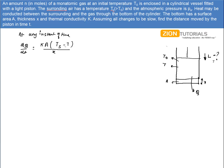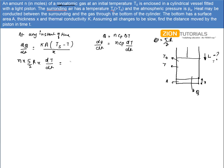We know that Q is given by N·Cp·ΔT. So dQ/dt can be written as N·Cp·dT/dt. The value of Cp is 5R/2 because for a monoatomic gas, Cp equals 5R/2. It is given that the gas is monoatomic. Equating the two expressions: N·(5R/2)·dT/dt = KA(Ts - T)/X.